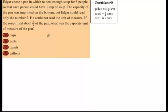Edgar chose a pan in which to heat enough soup for five people so that each person could have one cup of soup. The capacity of the pan was imprinted on the bottom, but Edgar could only read the number two. He could not read the unit of measurement. If the soup filled about three-fourths of the pan, what was the capacity unit of measurement of the pan?